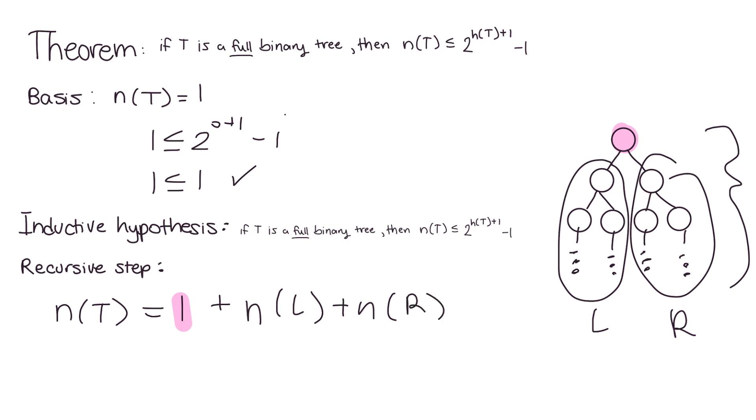And, we already know what the n function does by our inductive hypothesis. So, this is where we can replace stuff. So, I have to use the less than or equal to symbol. And then, I'm just going to do 2 to the h(L)+1 minus 1 plus 2 to the h(R)+1 minus 1.